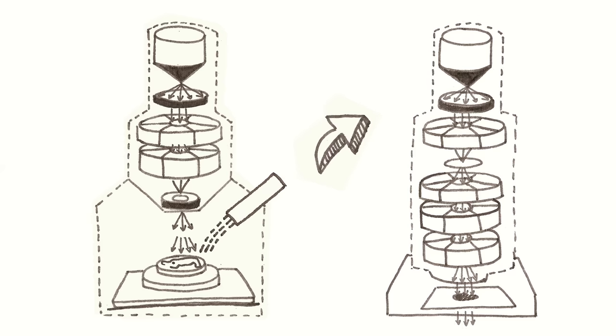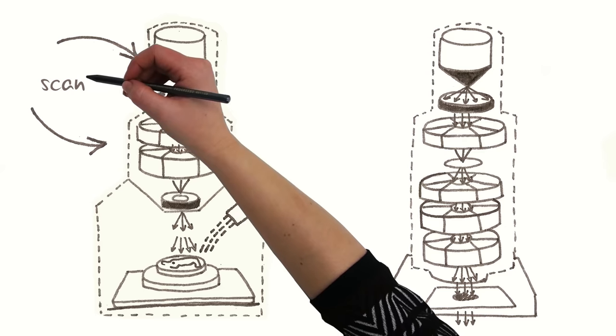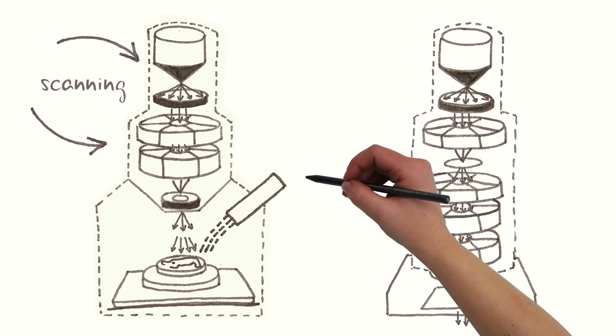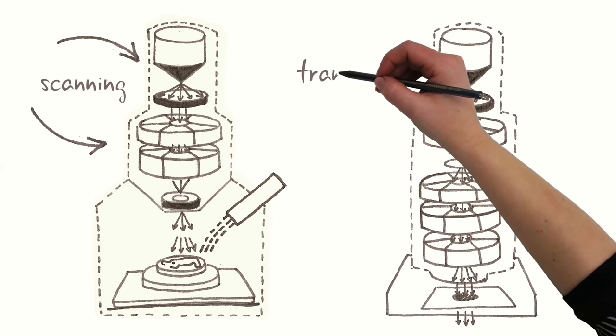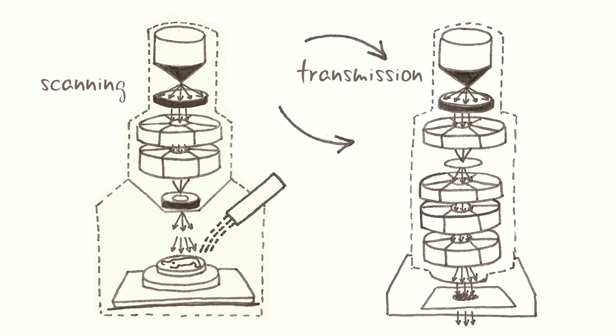I see. And according to the way the electron beam hits the sample, we distinguish two basic types of electron microscopes. Scanning and transmission. Exactly.